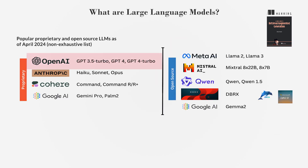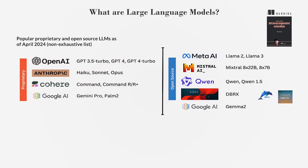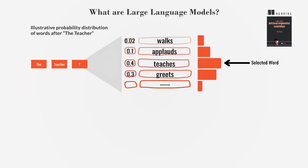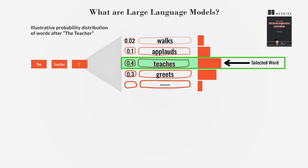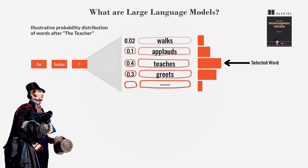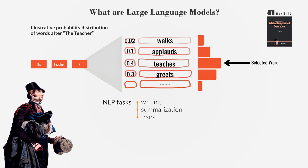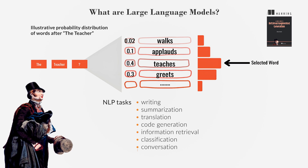LLMs, like the ones from OpenAI, Anthropic, Google, and others, are big AI models trained on massive datasets of human-generated text. By learning statistical patterns in the data, they predict the next word in a sequence and can generate long pieces of text. LLMs have billions of parameters that are learned during training, enabling natural language processing tasks like writing, summarization, translation, code generation, information retrieval, classification, conversation, and more.